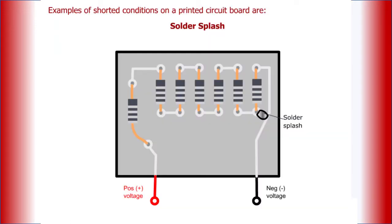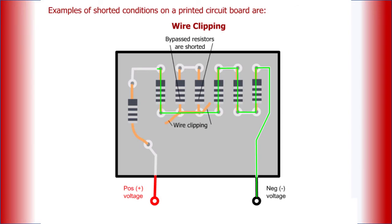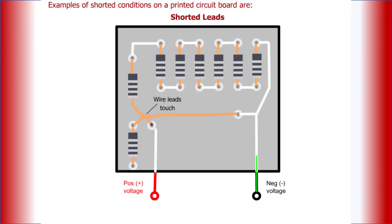Examples of shorted conditions on a printed circuit board are: solder splash, wire clipping, and shorted leads. See how the bypass resistors are shorted.